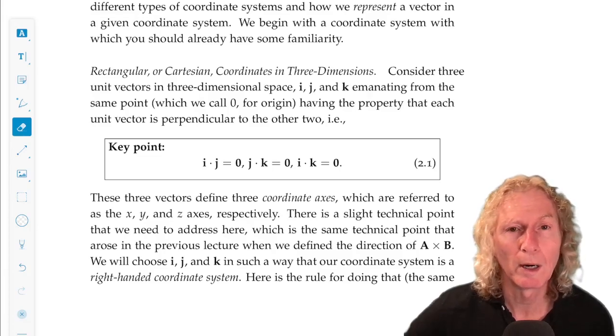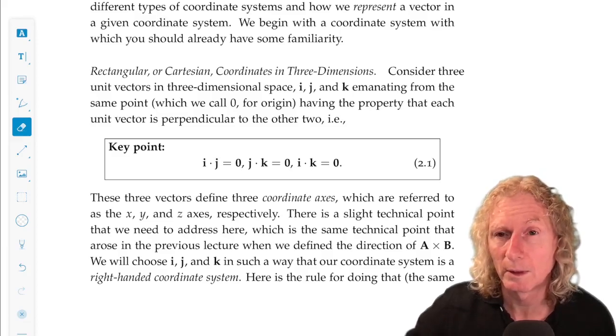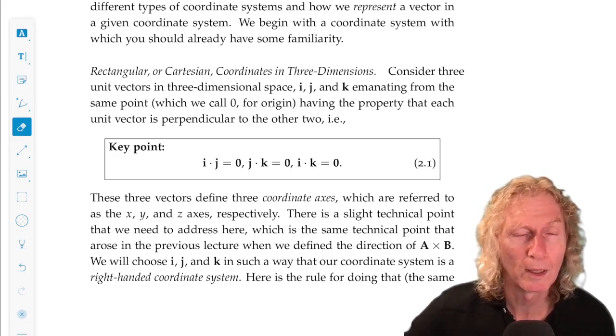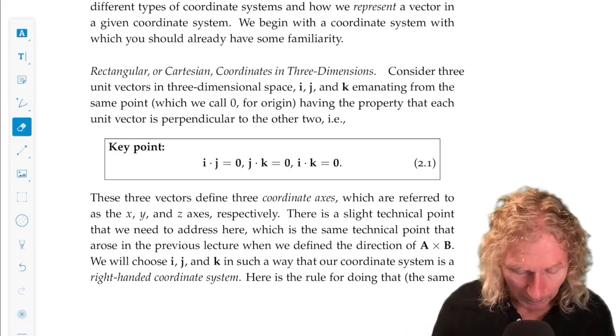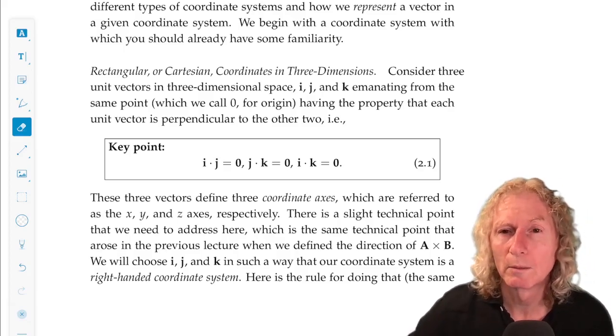We'll call them i, j, and k. They're unit vectors that are constant in direction in space. They have unit length, and they're mutually perpendicular.